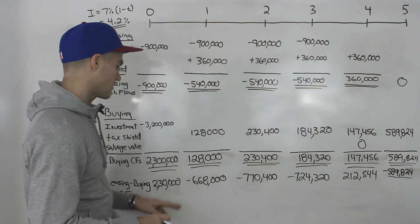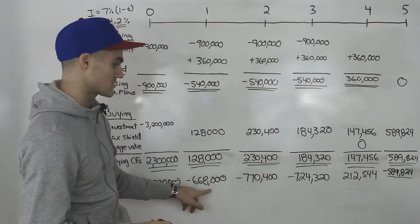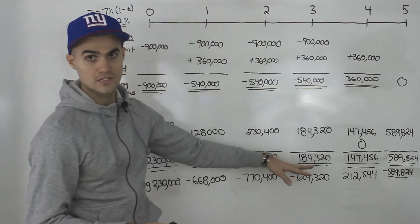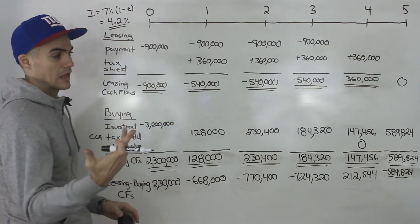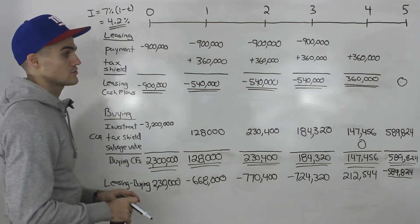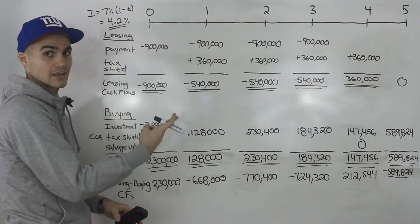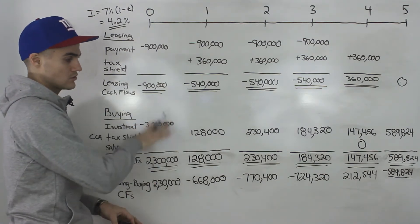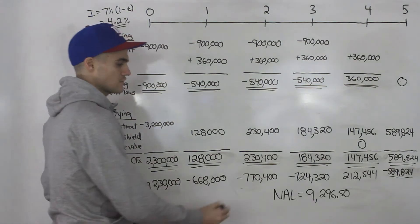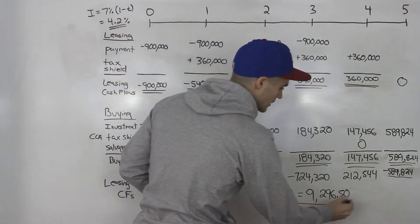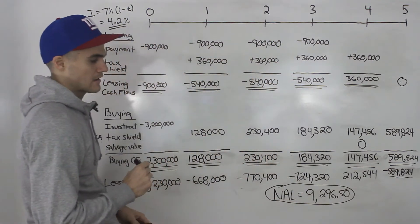Just like before, plug all the incremental cash flows into your calculator — CF0, CF1, CF2, etc. — using the same after-tax discount rate of 4.2%, and calculate the net advantage to leasing. All of this is in the Excel sheet provided. When you compute that NPV, you get $9,296.50.